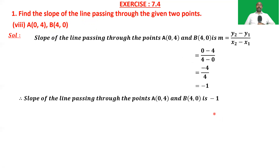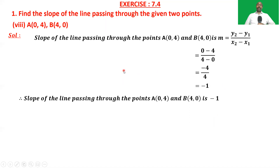That completes the chapter on coordinate geometry. In this chapter, we have learned the distance formula, section formula, area of a triangle when three vertices are given, and the slope of a line passing through two points. These are very important topics in coordinate geometry, and this chapter is very useful in higher classes as well. You must learn this chapter very carefully. In the next class, we shall begin a new chapter. See you in next class. Bye.